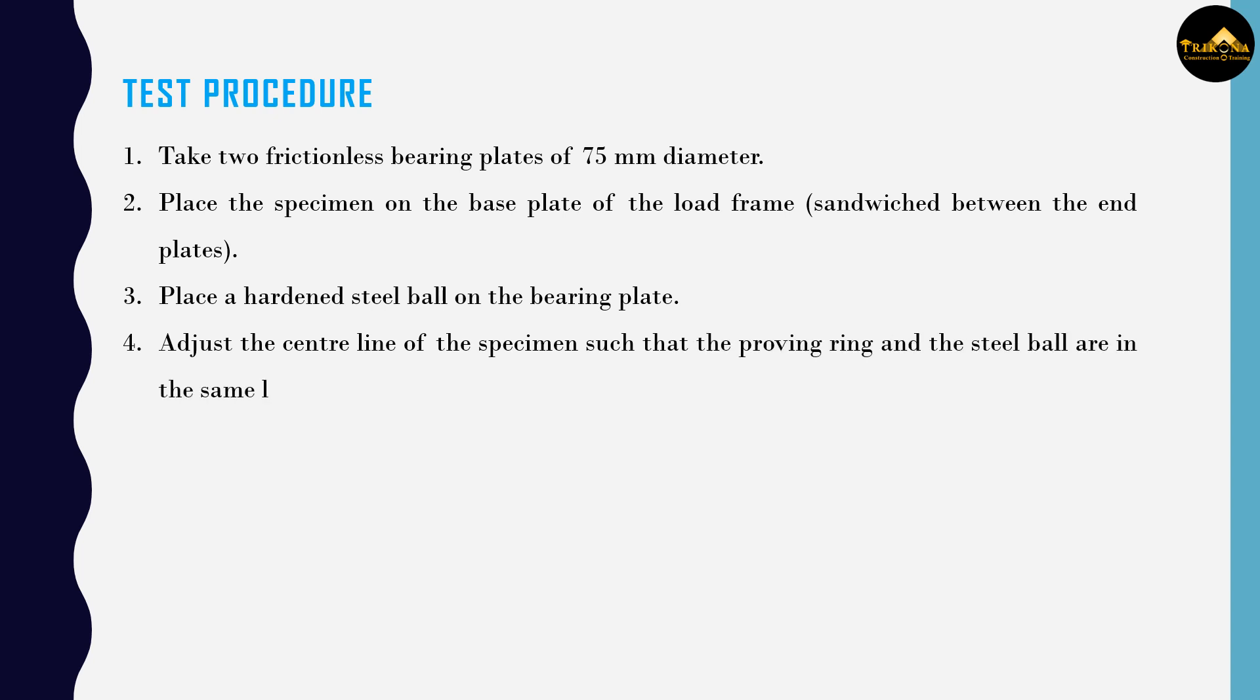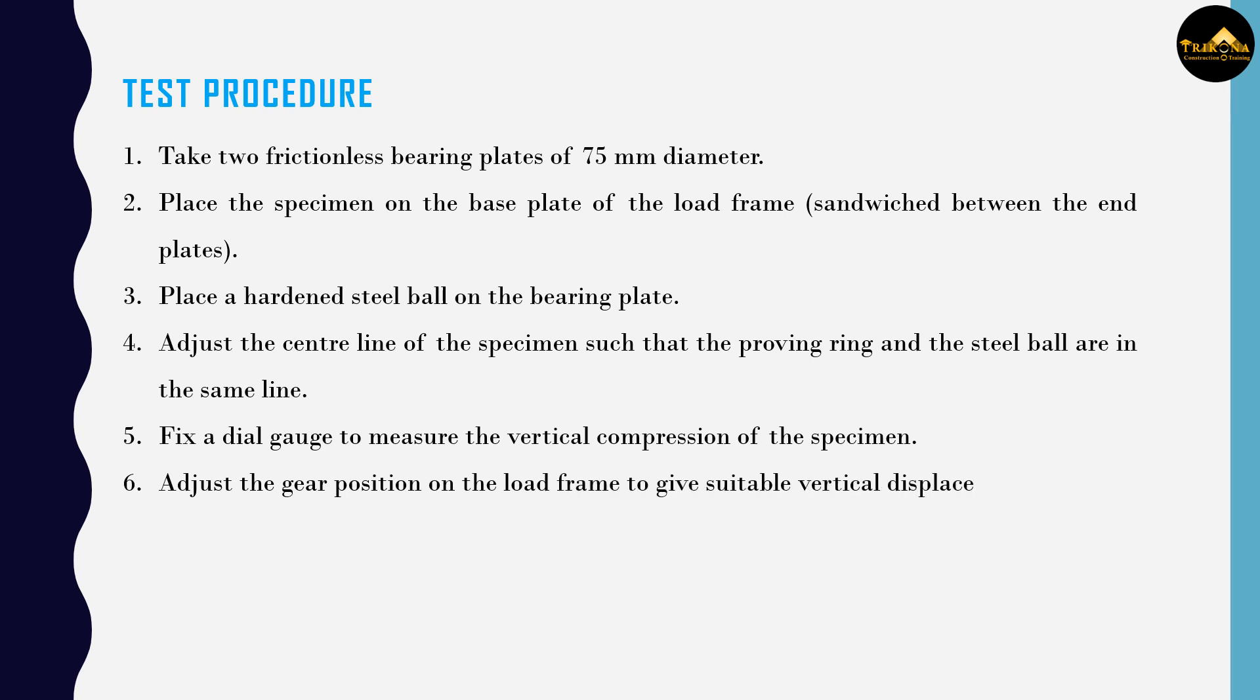Fix a dial gauge to measure the vertical compression of the specimen. Adjust the gear position on the load frame to give suitable vertical displacement. Start applying the load and record the readings of the proving ring dial and compression dial for every 5 mm compression or 30 seconds. Continue loading till failure is complete.